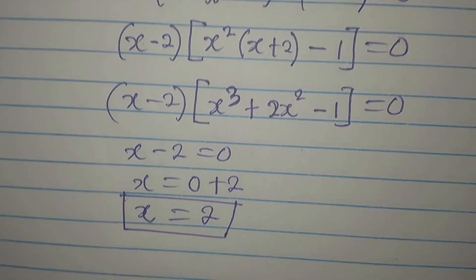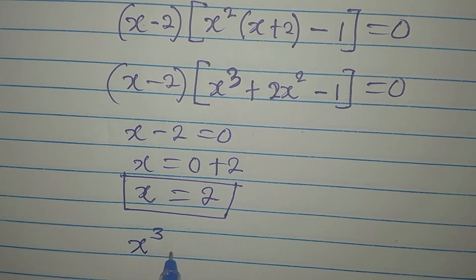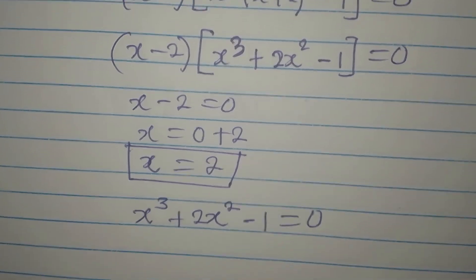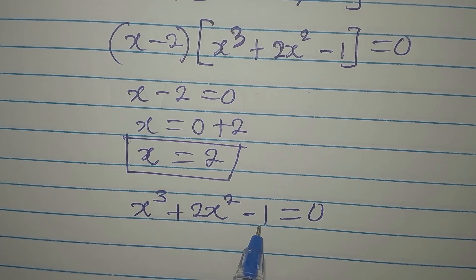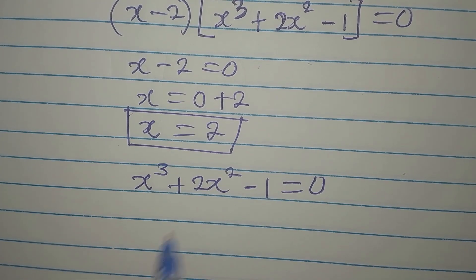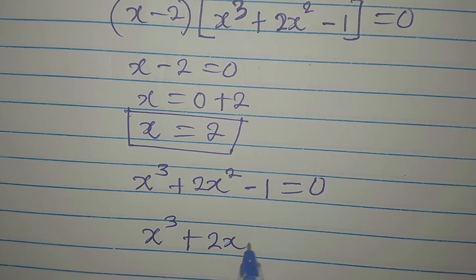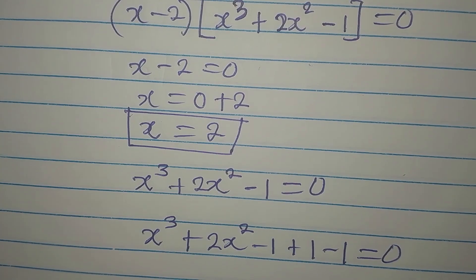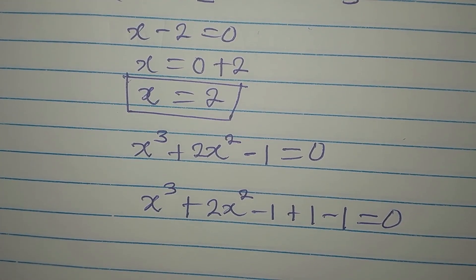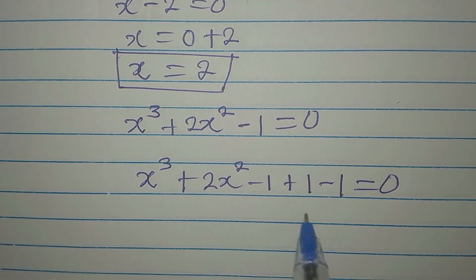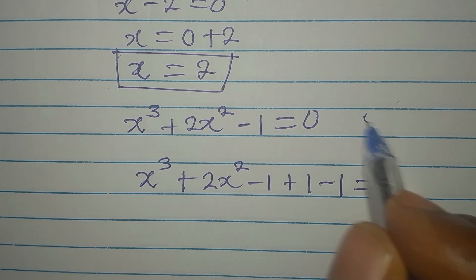To get the other solutions, I'll take the factor x cubed plus 2x squared minus 1 and equate it to 0. To make this factorizable, I'll rewrite it as x cubed plus 2x squared minus 1 plus 1 minus 1 equals 0. I have not really changed anything — I just want it to be factorizable. Since 1 minus 1 is nothing, both equations are the same.